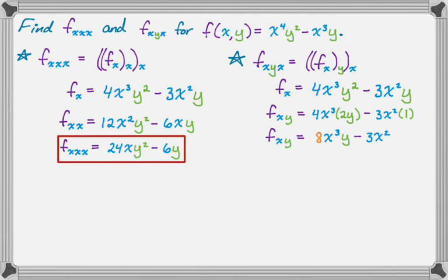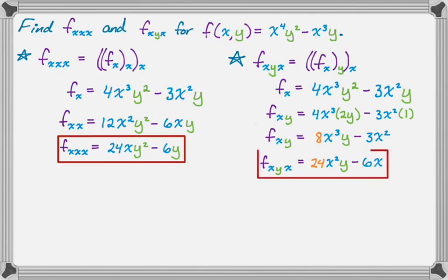Now I need to find the derivative of this with respect to x — so partial x,y,x. With respect to x, x is a variable again. It's going to be 8 times the derivative of x cubed, which is 3x squared, so 8 times 3 is 24x squared, and y is a constant, minus the derivative of 3x squared with respect to x which is 6x. So we get 24x squared y minus 6x.